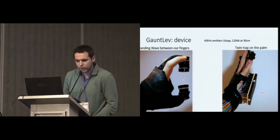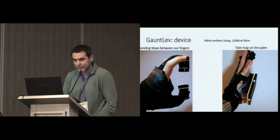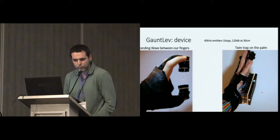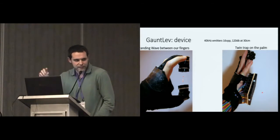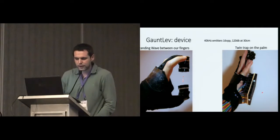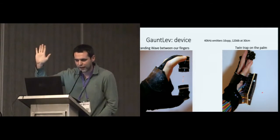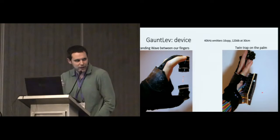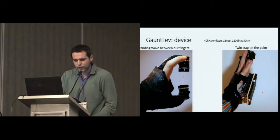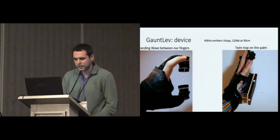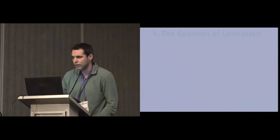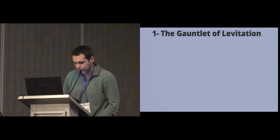So if you had to design a device for levitation, I think, at least for me, the most straightforward way would be to use that. You use a standing waves between your fingers, and you use a twin trap on the palm of your hand. And basically, this device is a prototype, and it was using 40 kilohertz emitter with a 16 volts peak-to-peak, 120 decibels at 30 centimeters. It's basically the standard system that we all use.